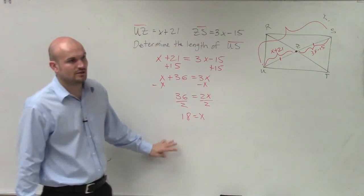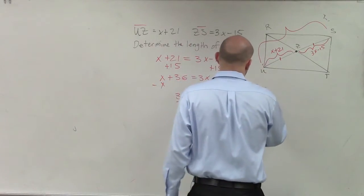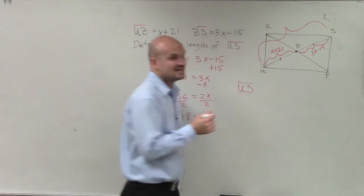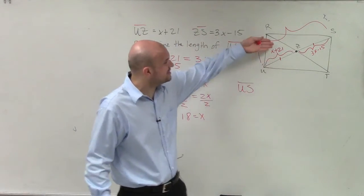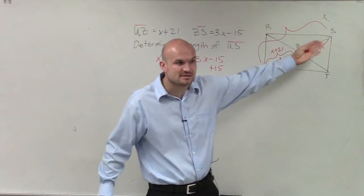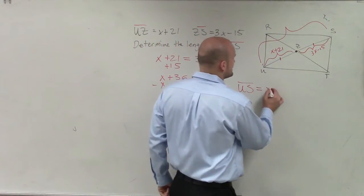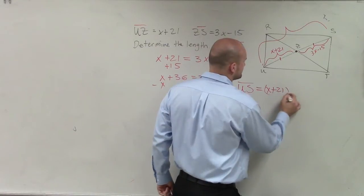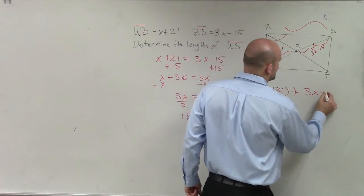But now we need to look at, what's the length of US? So the length of US is, since these are bisected, the length is going to be the sum of these two halves. So you could say that's x plus 21 plus 3x minus 15.